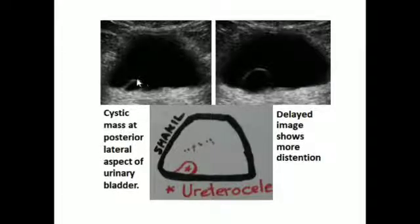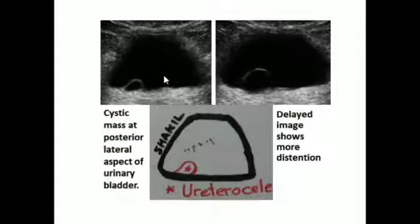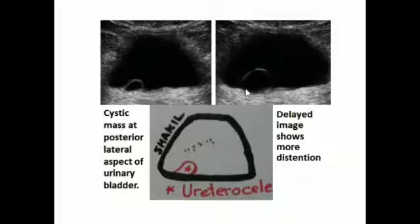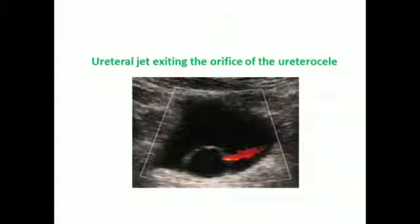In this image, we see a cystic mass at the posterolateral aspect of the urinary bladder lumen. In this next image, the size of the urethrocele is enlarged, demonstrating that in real time it can change size due to filling and emptying. This diagram shows the urethrocele and the urinary bladder, with the orifice of the urethrocele visible.